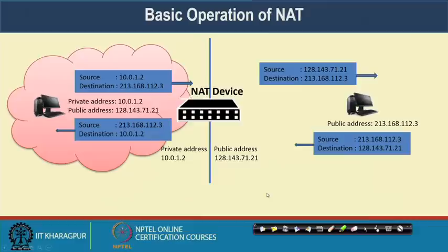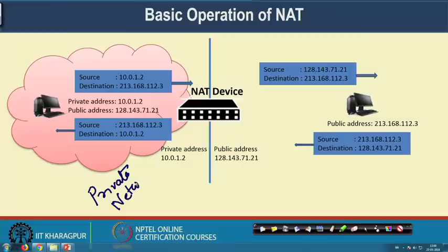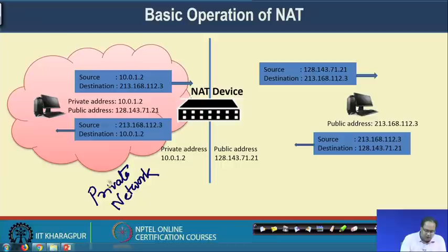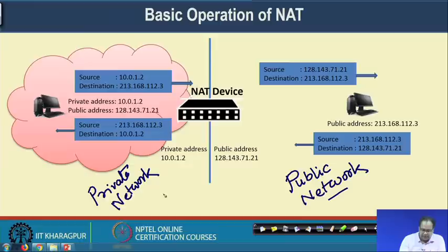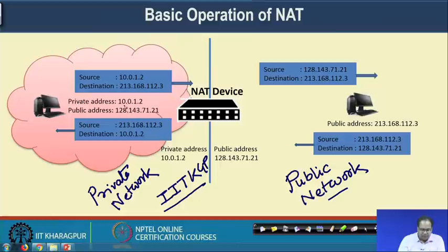This is the basic operation of a NAT. NAT is nothing but a device, router, or gateway. On one side of the NAT we have a private network, and then we have the public network. In the private network, multiple machines are identified by their private IP addresses. Think of it as the IIT KGP network — inside that network, one machine is identified by the private IP address 10.0.1.2.